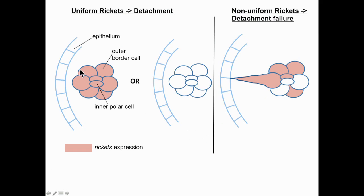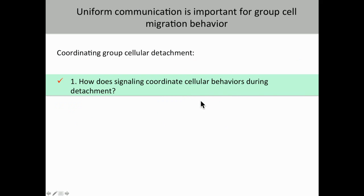When RICKETS is uniformly expressed within the border cells — whether in all of them or in none of them — the border cells are able to appropriately detach from the epithelium. When RICKETS is expressed in some border cells but not others, the border cells have trouble detaching and remain tethered to the epithelium. So uniform signaling within the border cell cluster is important for detachment.